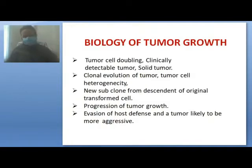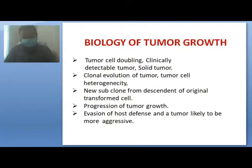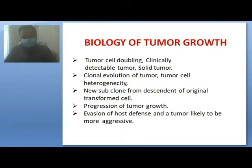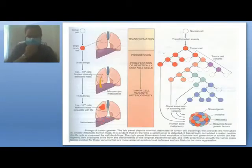We now come to the biology of tumor growth — how tumors acquire their size. This occurs through tumor cell doubling, resulting in a clinically detectable tumor. Solid tumor is one example. Clonal evolution of tumor cells and heterogeneity will be illustrated in the subsequent flow diagram, which makes it easier to grasp. New subclones arise from descendants of the original transformed cells, driving tumor progression, evasion of host defenses, and making the tumor progressively more aggressive.